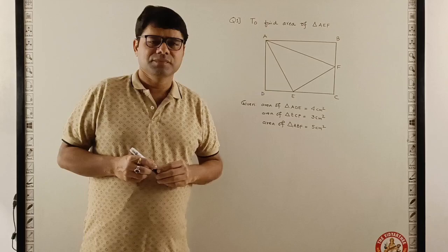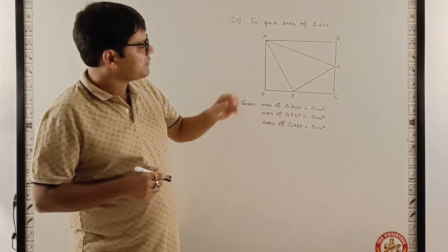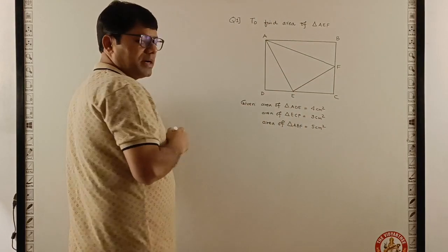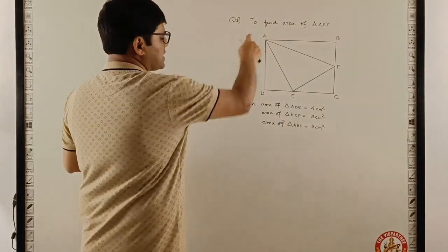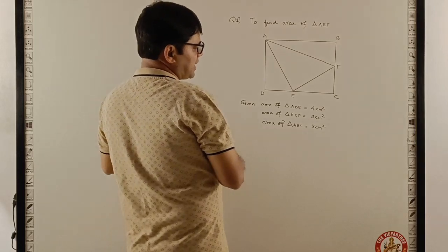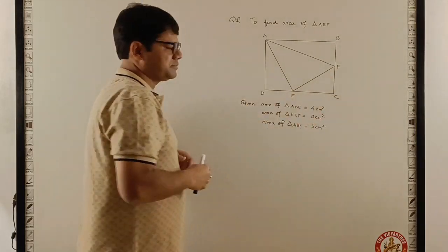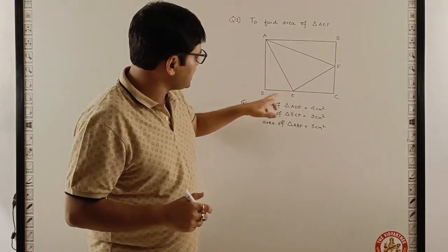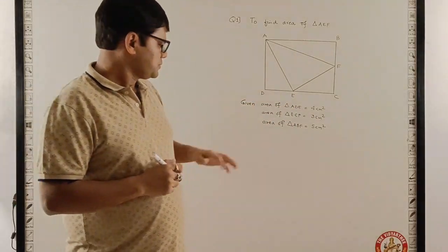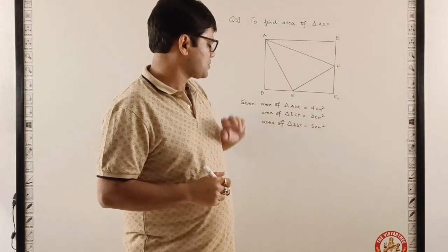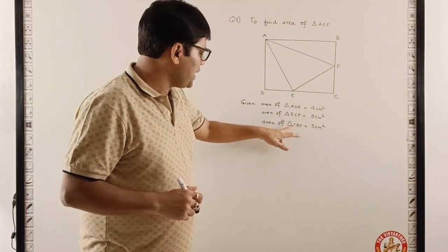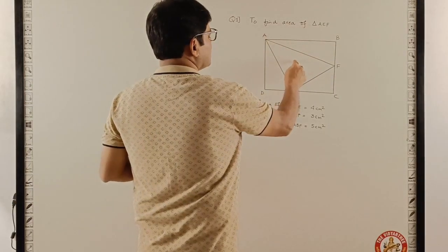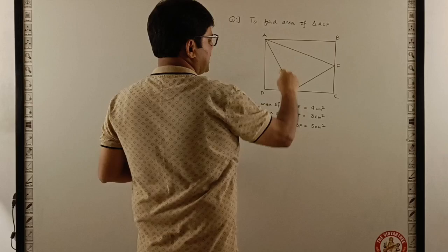Here we have a rectangle. And you can see there are four triangles. To name these triangles, there is triangle ABF, triangle ADE, and triangle ECF. Three areas are already given. The area of ADE is 4 cm², area of ECF is 3 cm², and area of ABF is 5 cm². The question is to find the area of triangle AEF.